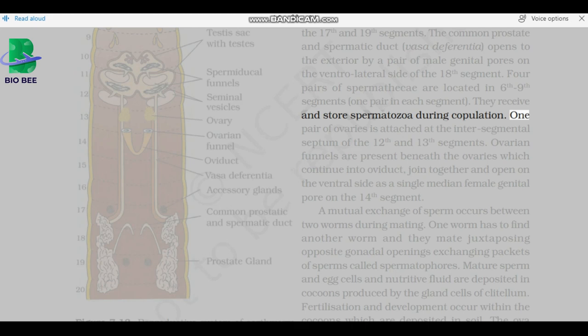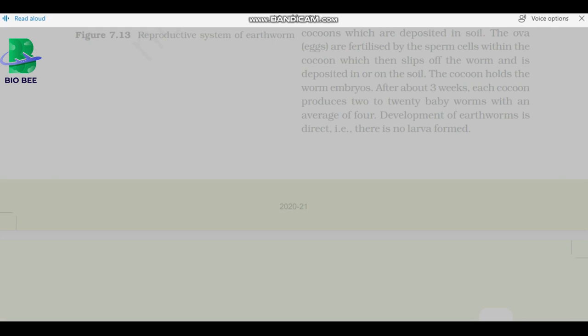One pair of ovaries is attached at the intersegmental septum of the 12th and 13th segments. Ovarian funnels are present beneath the ovaries which continue into oviduct, joined together, and open on the ventral side as a single median female genital pore on the 14th segment. A mutual exchange of sperm occurs between two worms during mating. One worm has to find another worm, and they mate juxtaposing opposite gonadal openings, exchanging packets of sperms called spermatophores. Mature sperm and egg cells and nutritive fluid are deposited in cocoons produced by the gland cells of clitellum.